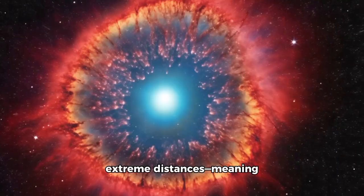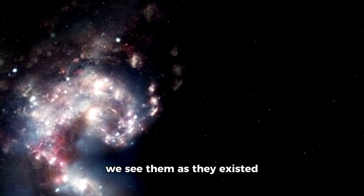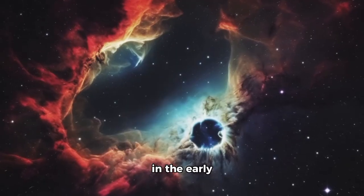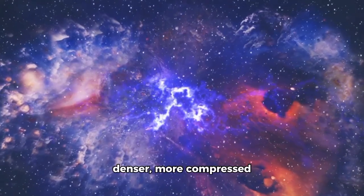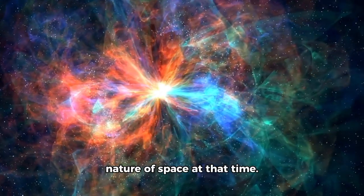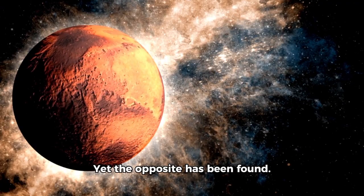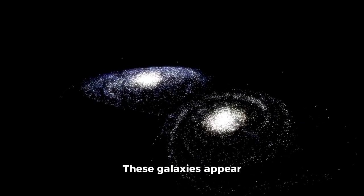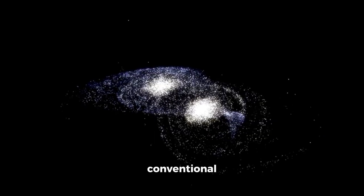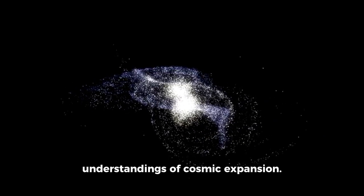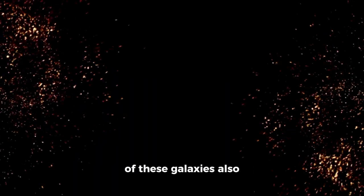Observations show these galaxies to be two to three times smaller than those previously detected by the Hubble Space Telescope, contradicting theoretical expectations. According to the prevailing model, galaxies observed at extreme distances should appear larger because of the denser, more compressed nature of space at that time, yet the opposite has been found. These galaxies appear smaller and more refined, which conflicts with conventional understandings of cosmic expansion.